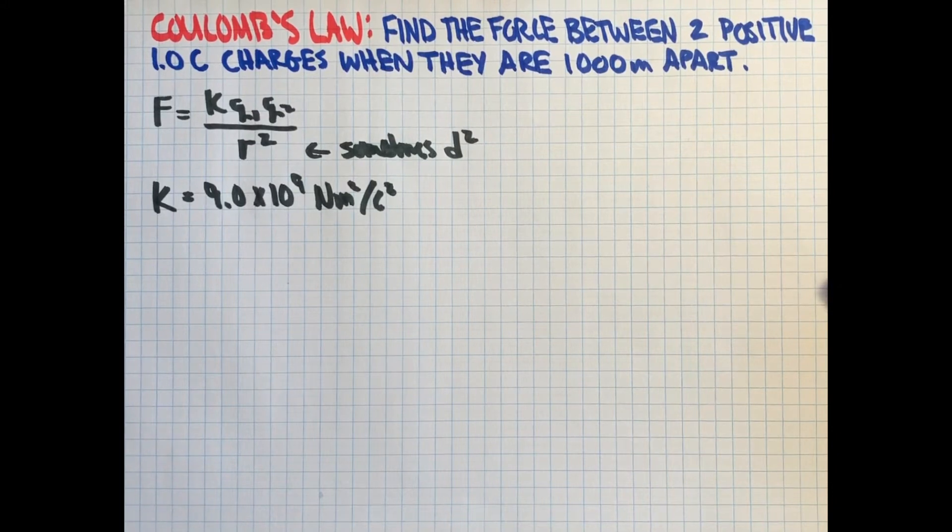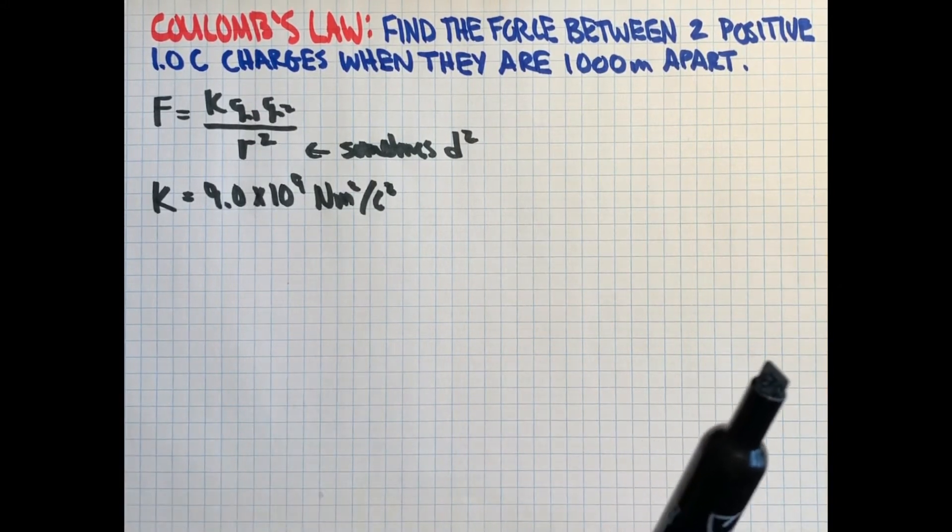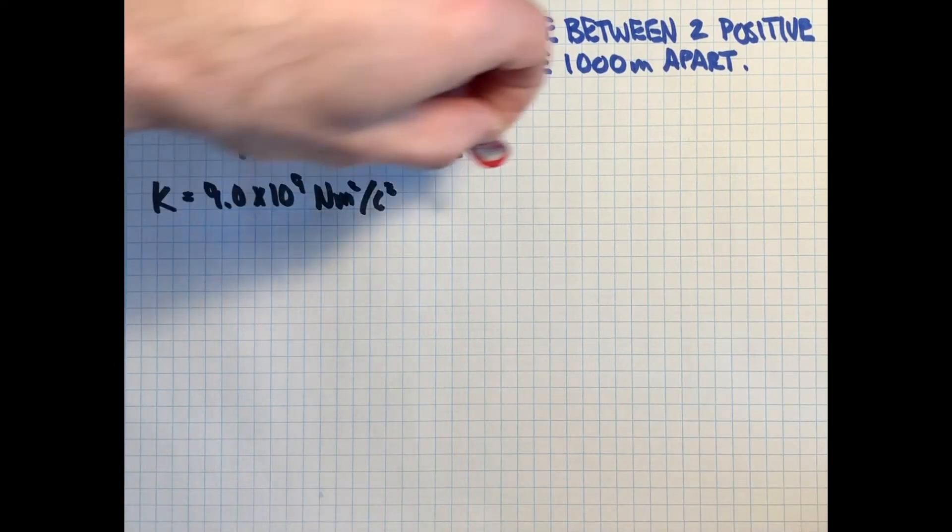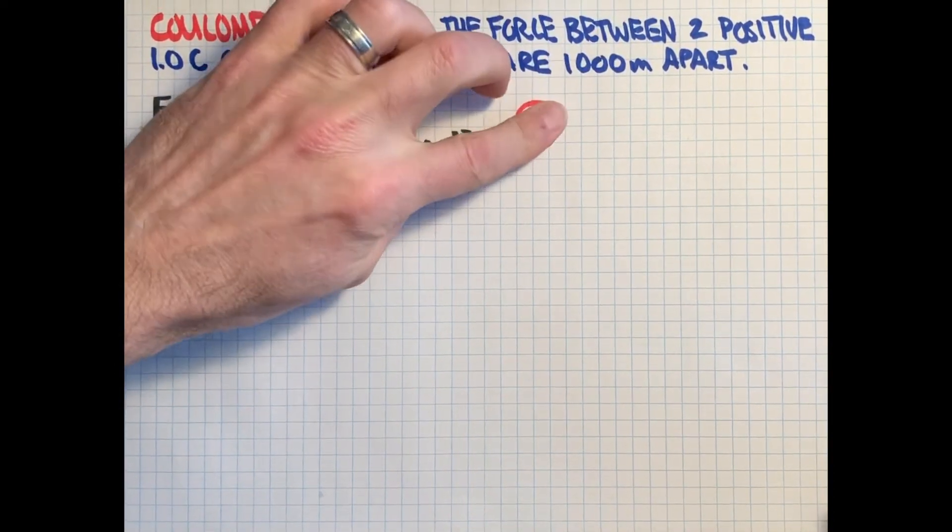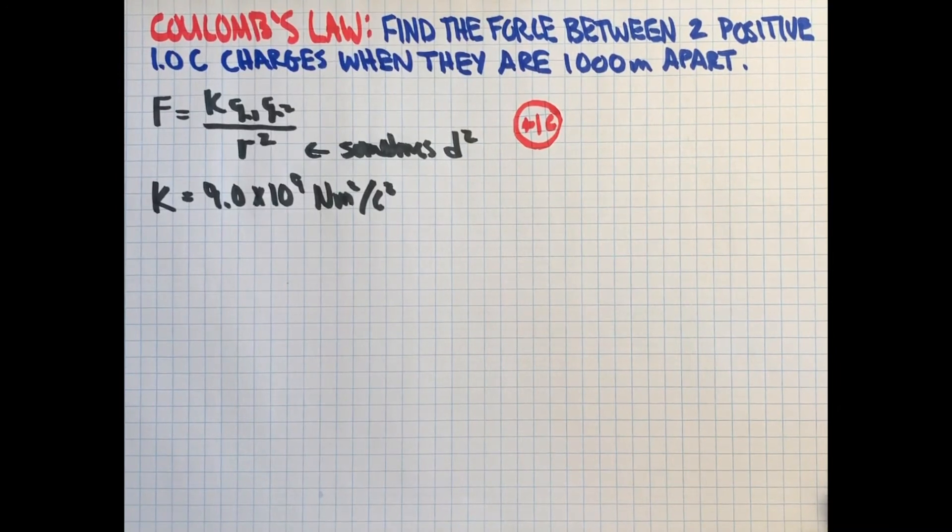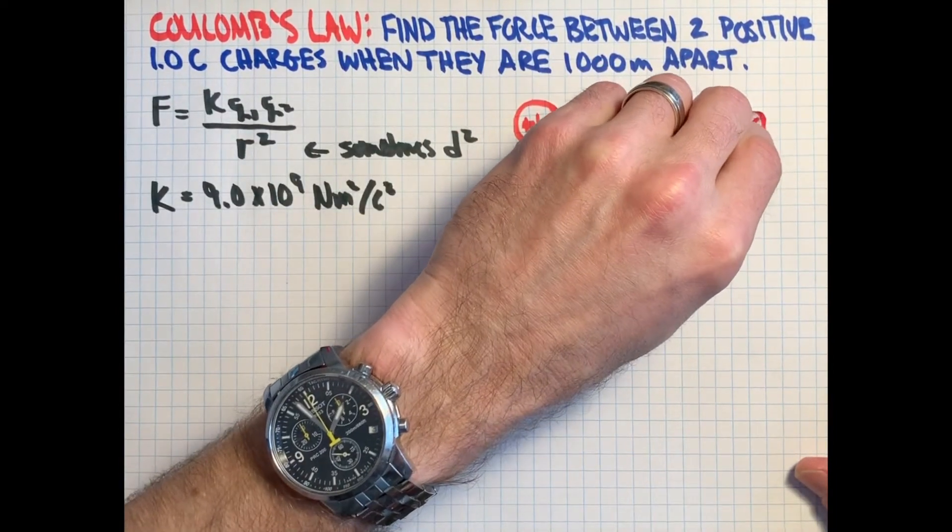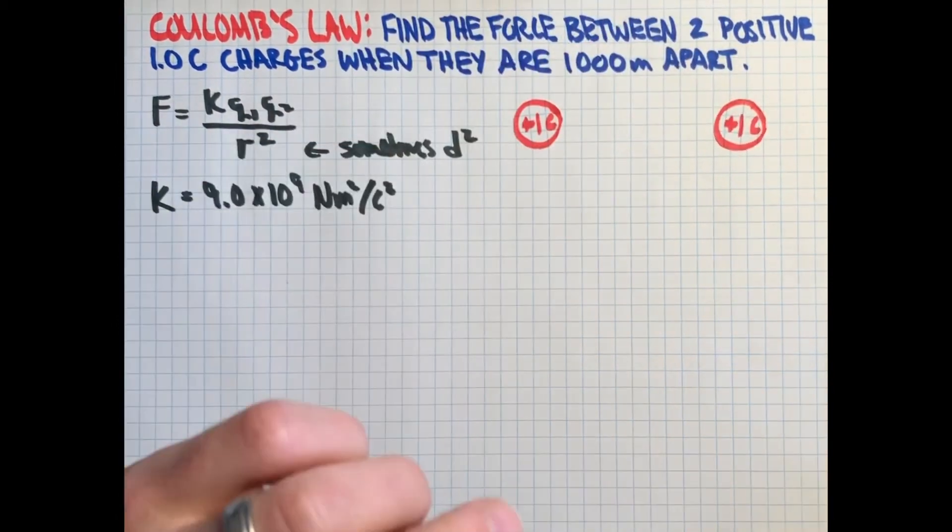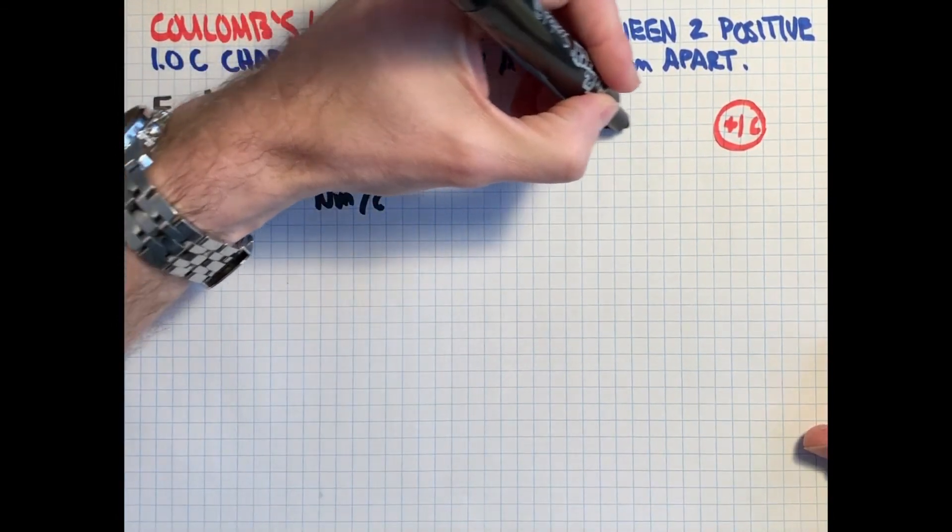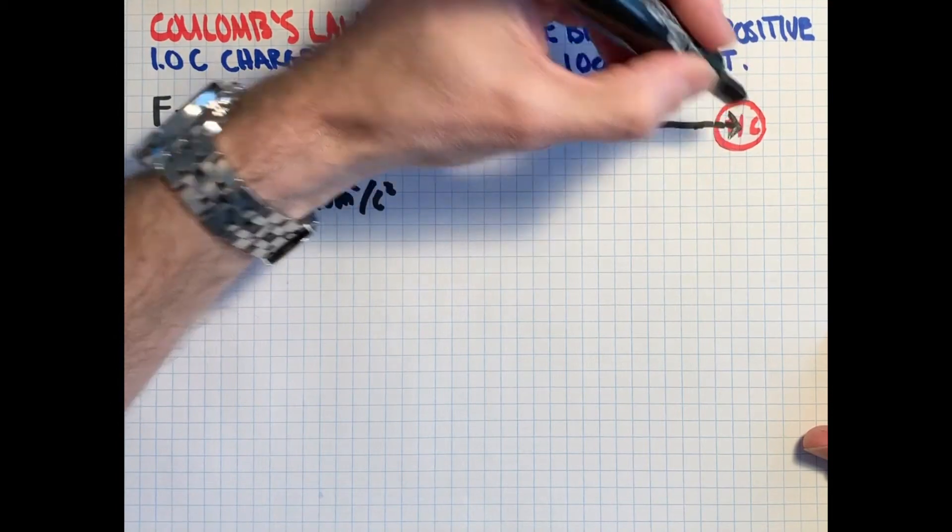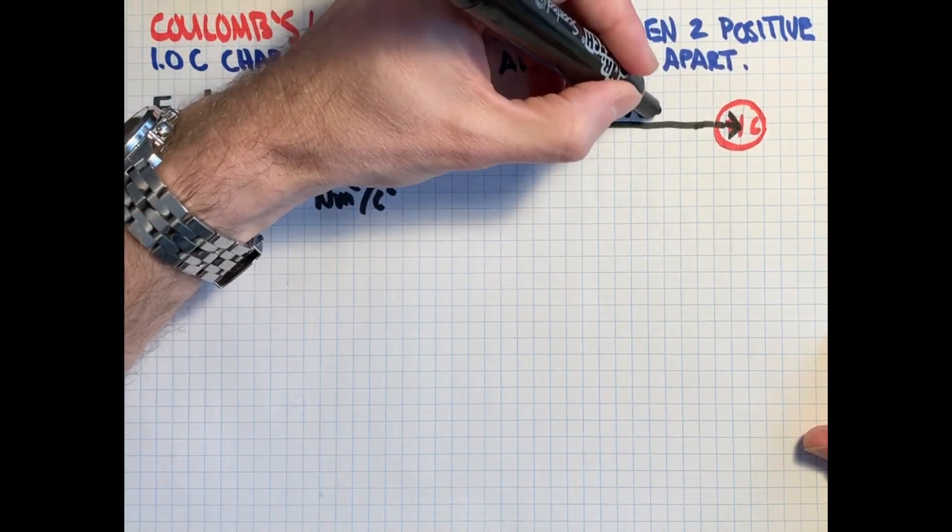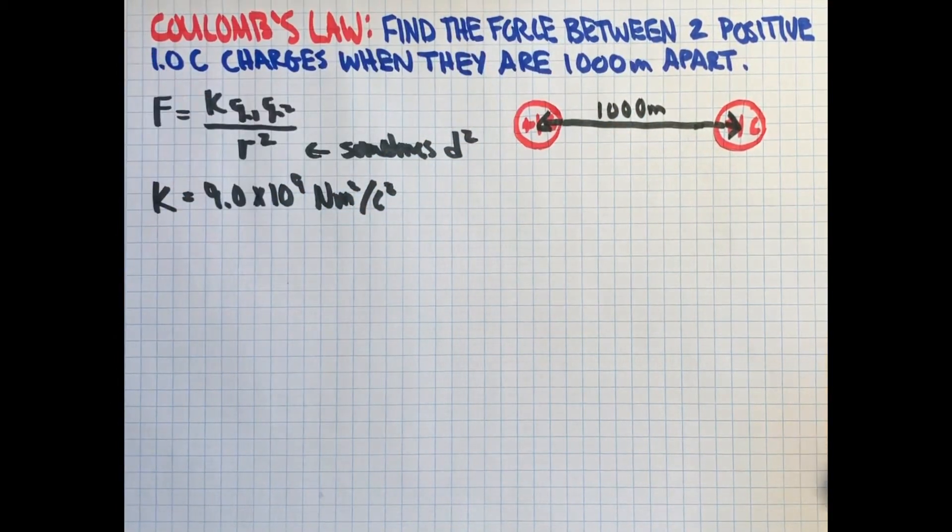So let's take a look at the numbers in this example. So we have two charges, one Coulomb, which again, a lot of charge, so I'm going to put that guy there. And I did these not as drawings because in case I make a mistake, I can simply use these again. And we know that these are going to be 1,000 meters apart.